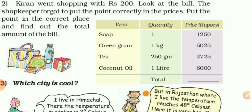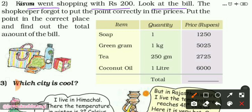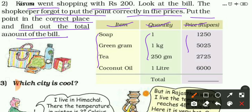The question is: Kiran went shopping with 200 rupees. Look at the bill — it shows item, quantity, and price in rupees. The shopkeeper forgot to put the decimal point correctly in the prices. Put the point in the correct place and find out the total amount of the bill.